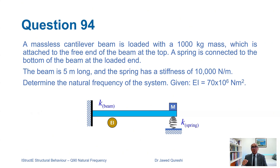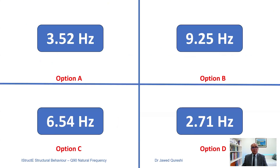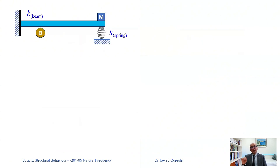Now let's move to the next question where the mass is attached at the top of the beam and underneath we have a spring — this system looks stronger compared to the one where the mass was hanging off the spring. A massless cantilever beam is loaded with a 1000 kg mass attached to the free end of the beam, and a spring is connected to the bottom of the beam at the loaded end. The beam is 5 meters long and the spring has a stiffness of 10,000 Newton per meter. Determine the natural frequency given EI equal to 17×10⁶ Newton meter squared. Pause and solve this first.